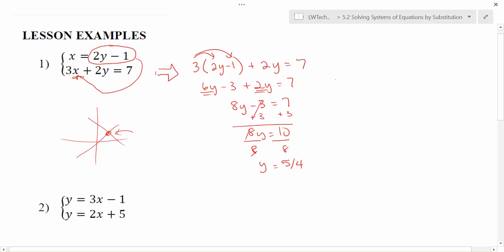I'll just use the first equation. x equals 2y minus 1. I just found that y was 5 fourths, so I'm going to have 2 times 5 fourths minus 1. x is already alone, so I just need to evaluate this. Think of this as 2 over 1, that gives me 5 halves minus 1. And now I would need a common denominator. 5 halves minus 2 halves is 3 halves.